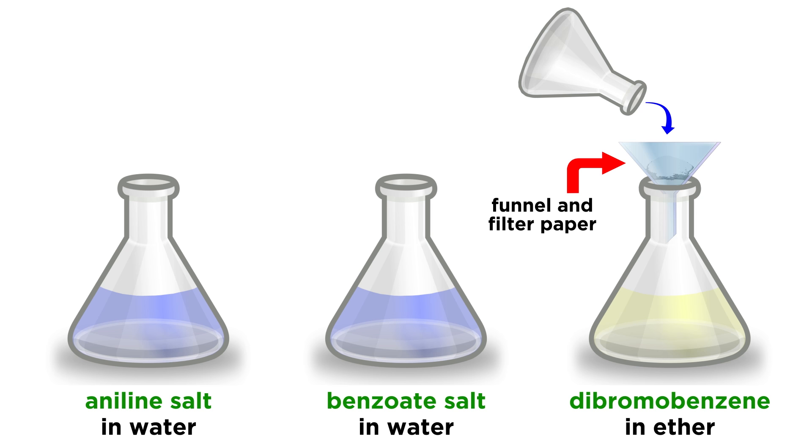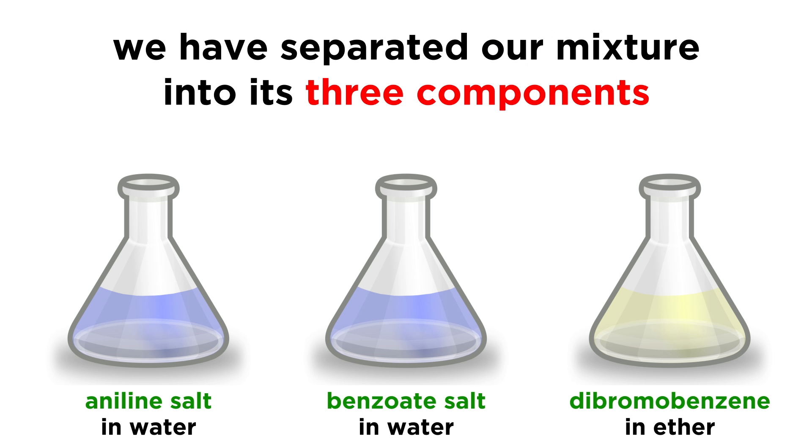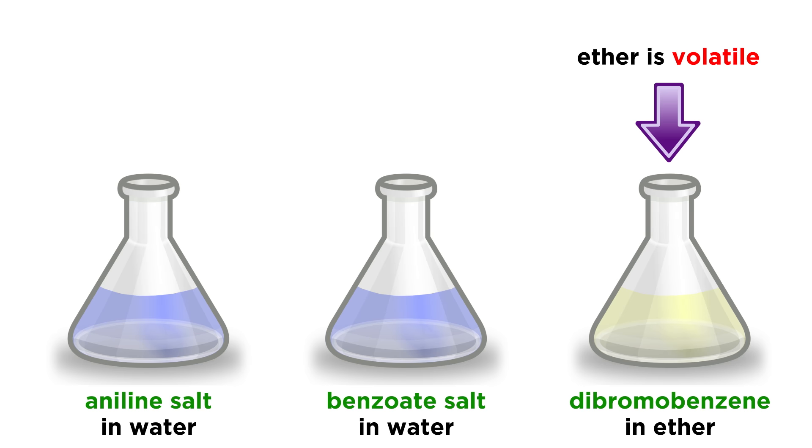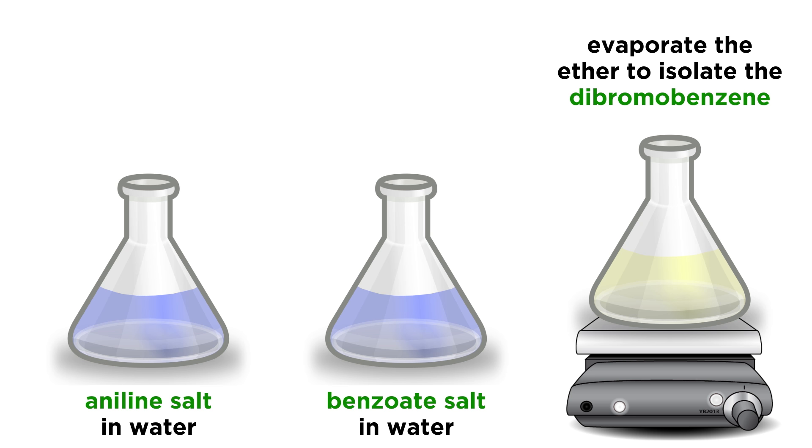Then use a funnel with some filter paper to transfer the solution into yet another flask, this time pre-weighed if you intend to measure the mass of product. So now we have successfully separated our mixture into its three components. So how do we get the solids back? Well, the dibromobenzene is easy. That's just sitting in ether, and ether is quite volatile, so let's just put it on a hot plate and use a low setting to gently evaporate the ether away. The dibromobenzene will remain as a residue, and you can weigh the flask again to get its mass.